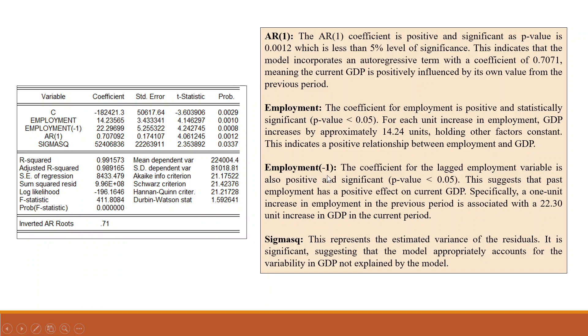Employment at lag 1. The coefficient for the lagged employment variable is also positive and significant, p-value less than 0.05. This suggests that the past employment has a positive effect on current GDP. Specifically, a 1 unit increase in employment in the previous period is associated with 22.30 unit increase in GDP in the current period.